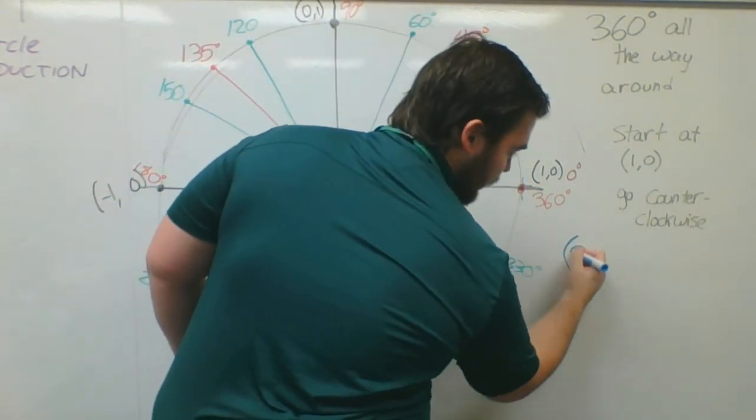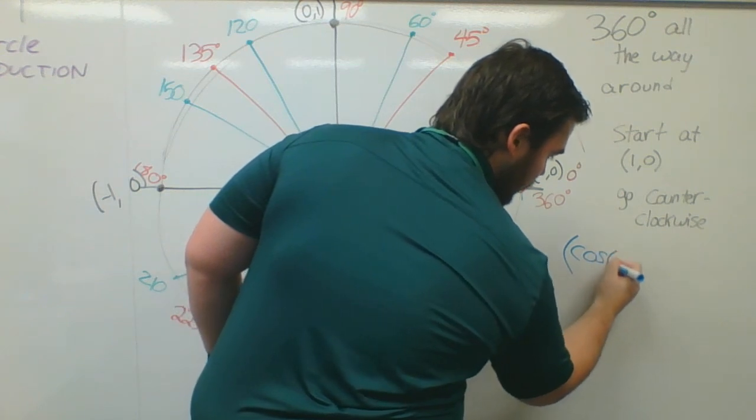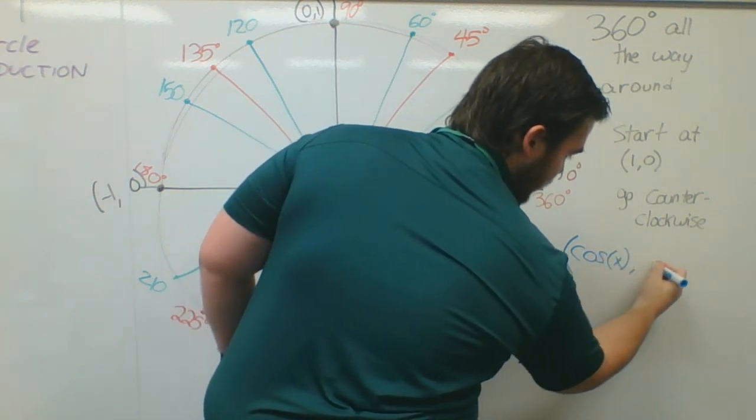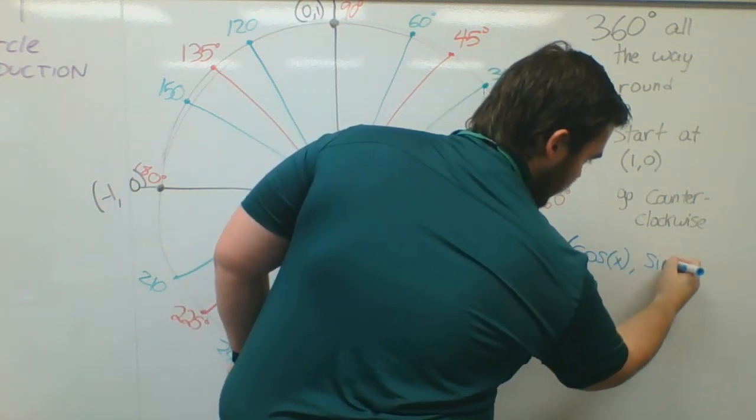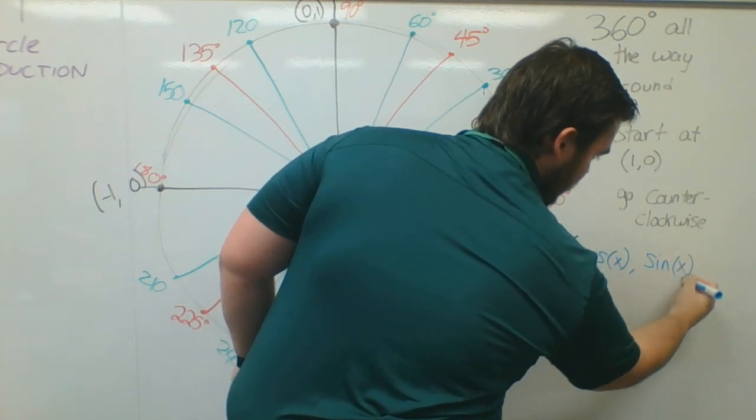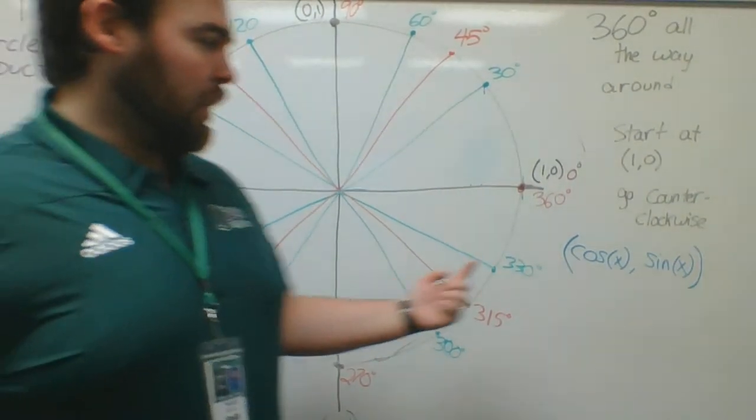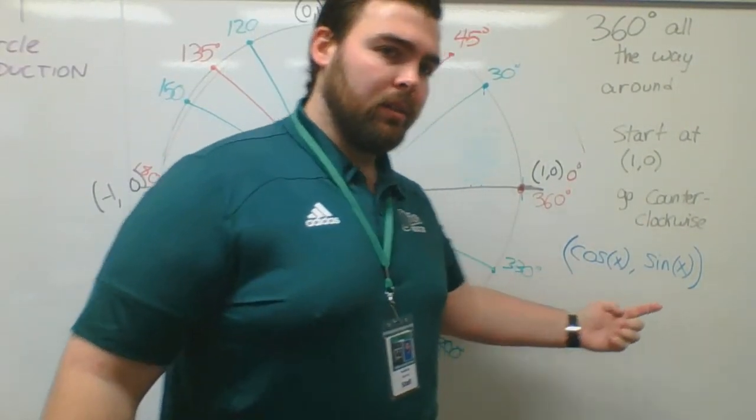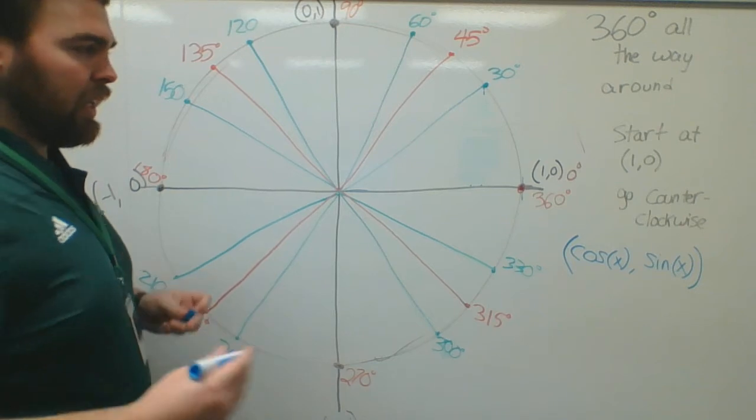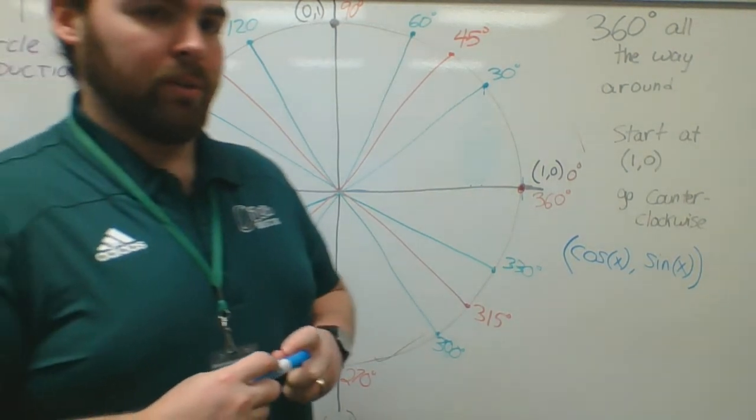One thing I want you guys to write down as a foreshadowing thing: with ordered pairs, I want you to write cosine of x, comma, sine of x. This is going to be your x point. This is going to be your y point. That will be more important in 1.2 part 2.